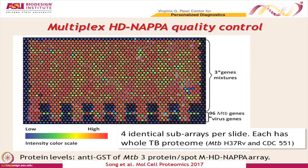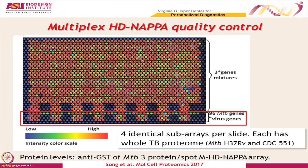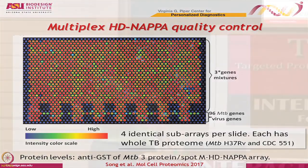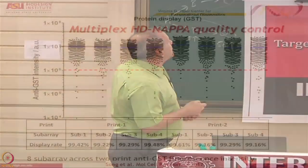This is what the array mix looks like when we printed it — the total protein. We used the HD NAPA combined with multiplexing, so we've combined the two technologies into one experiment. We also had a subset of individual proteins and viral gene proteins, which did two things for us: it gave us a reference spot for individual proteins, and it also gave us some positive controls so we could make sure everything was working, because we knew most people would have a response to some of these common viruses.